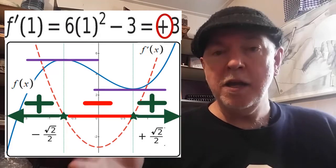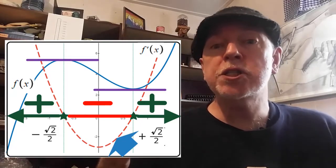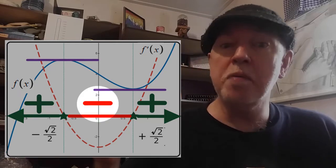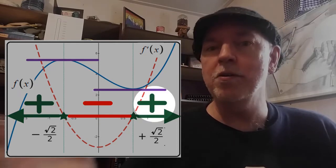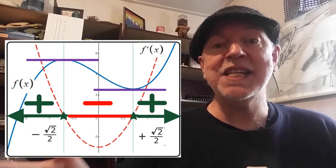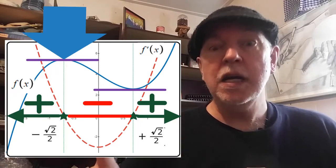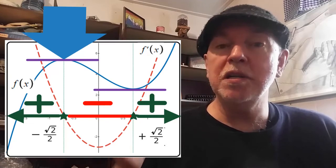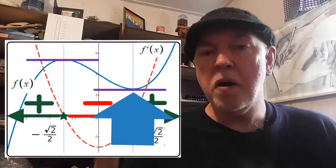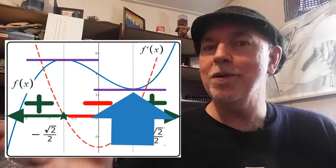Since the first derivative function is continuous, it flows smoothly from positive to negative to positive, passing through zero each time. That tells us that when x equals negative root 2 over 2, we're looking at a local maximum. And when x equals positive root 2 over 2, we're looking at a local minimum.